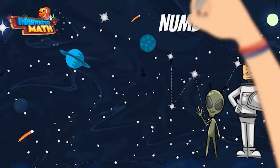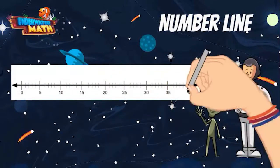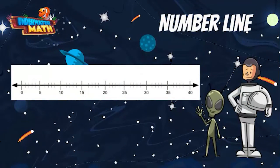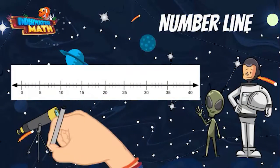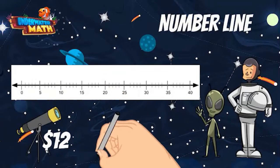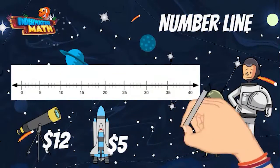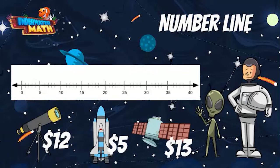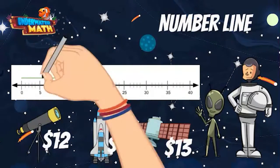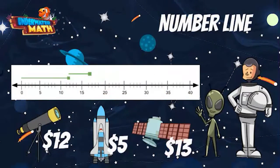Number lines are another way to model problems. Lenny and I went shopping for space gear. We bought a telescope for $12, a spaceship for $5 — it was on sale — and a satellite for $13. We can use this number line to show how much we spent in total. Each part of this problem is represented with its own jump on the number line. The first line moves to 12, the second line adds another 5 to the 12, and finally the third line adds another 13.